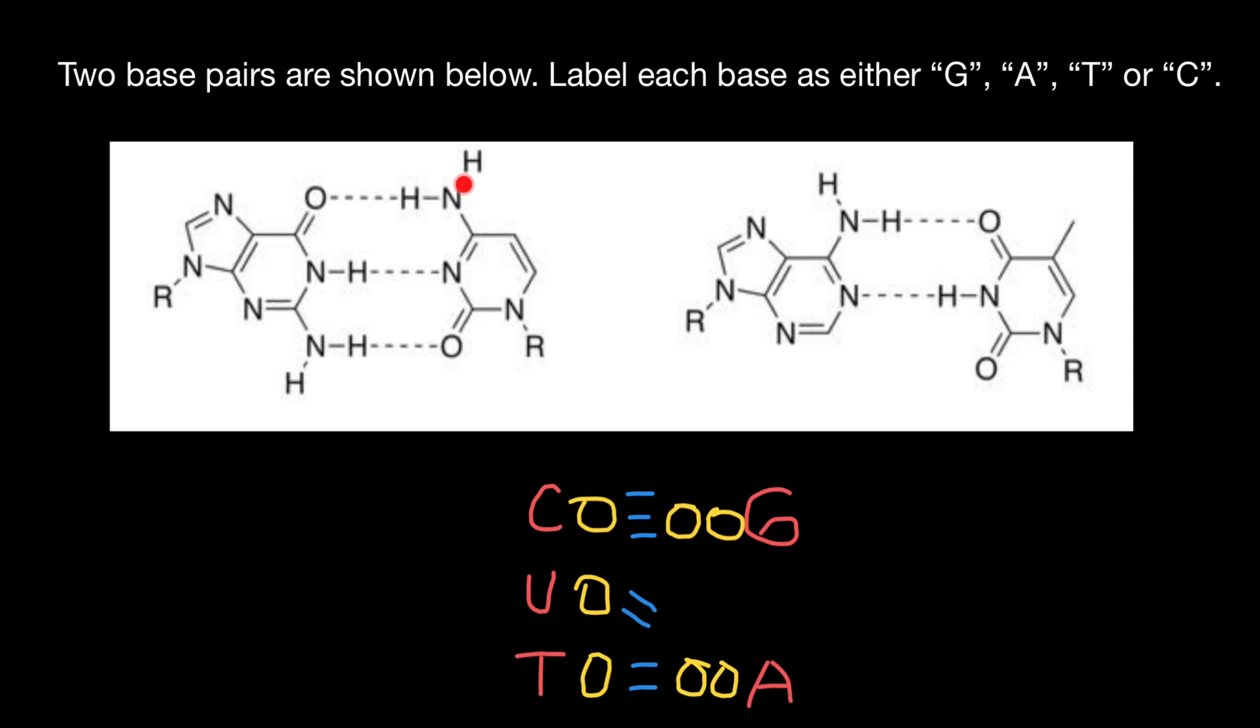That means that this is going to be cytosine because between these two bases, we have triple bond, as you see. So this molecule here has to be cytosine and this molecule has to be guanine.